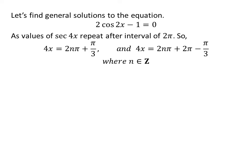So, the general solutions are 4x equals 2nπ + π/3 and 4x equals 2nπ + 2π - π/3, where n is an integer.